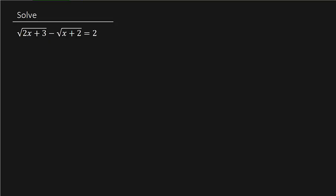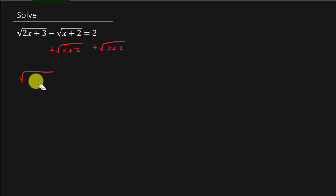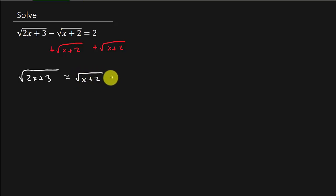So to solve this, normally when you solve an equation with a radical in it, you want to isolate the radical. But here we've got two of them. So what we want to do is isolate one of them. I'm going to add square root of x plus 2 to both sides. That's going to give me square root of 2x plus 3 is equal to square root of x plus 2 plus 2. You could have subtracted square root of 2x plus 3 to both sides — it doesn't matter which radical you isolate.